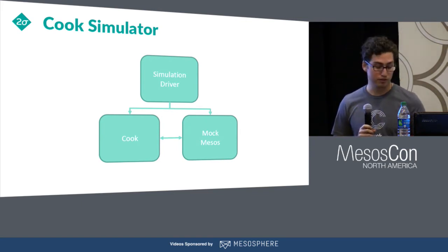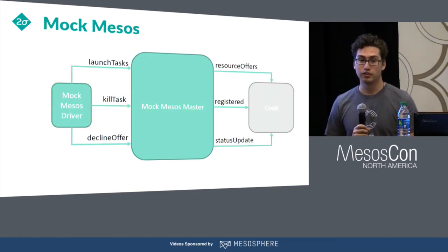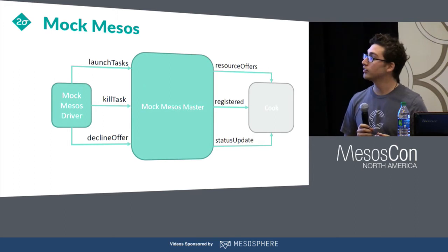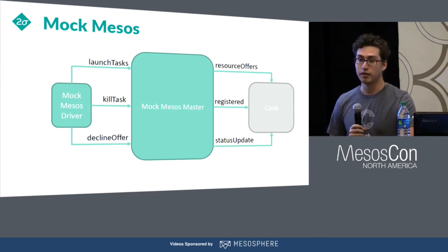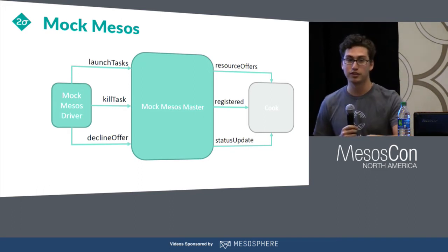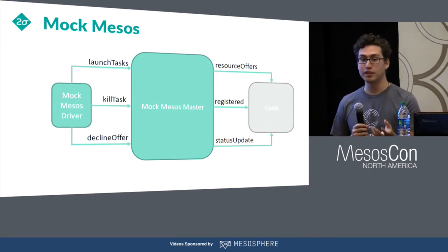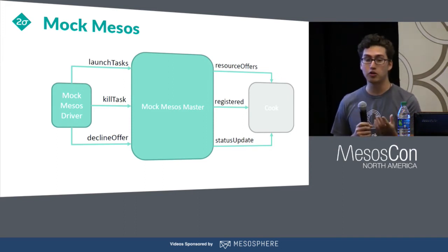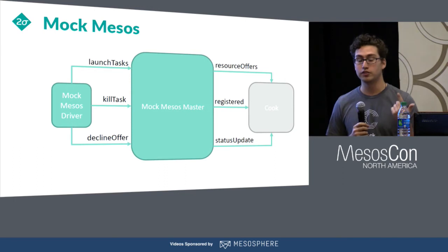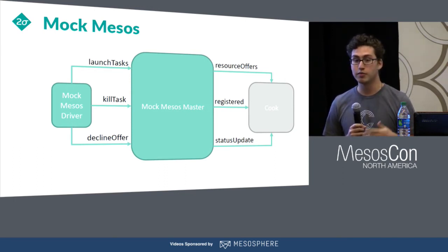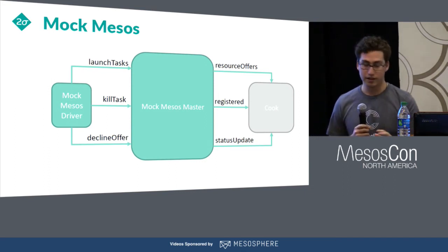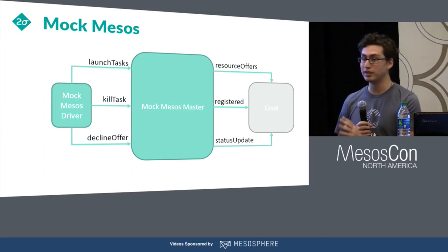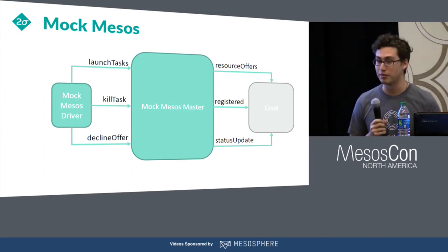We'll look at each component individually, starting with the mock of Mesos. When we implemented this, we needed to mock both the driver and the master. On the driver side, we needed to provide implementations for launch tasks, kill task, and decline offer. The mock of Mesos needs to be able to handle these calls, as well as call into Cook and provide resource offers, let it know when it's been registered, and provide information when tasks move to running and to completed. This was a lot of fun to implement, but we don't really have time to go into it — ask me afterwards.